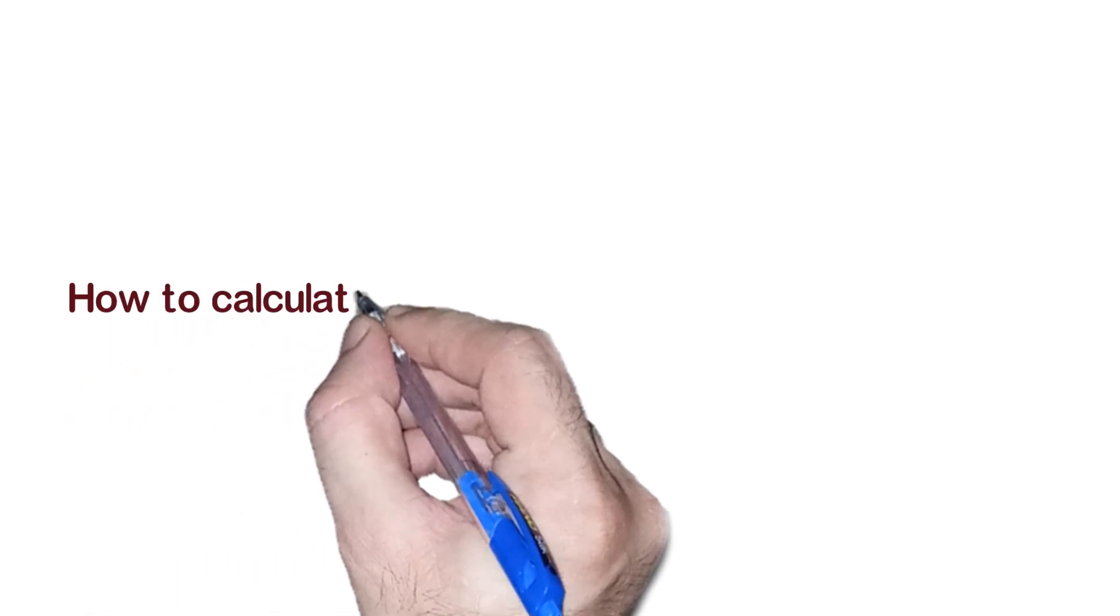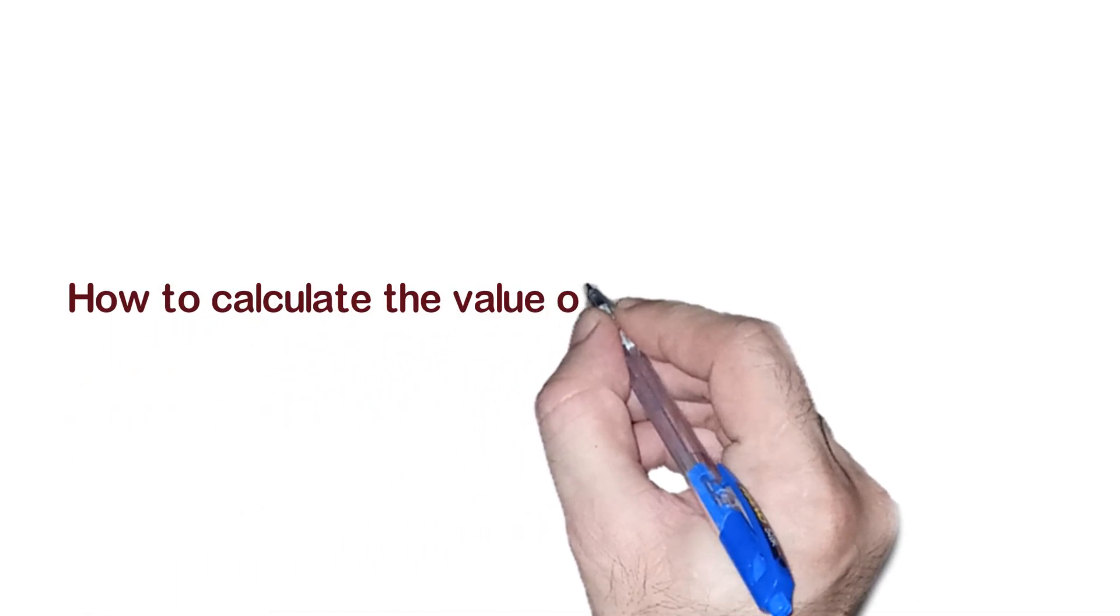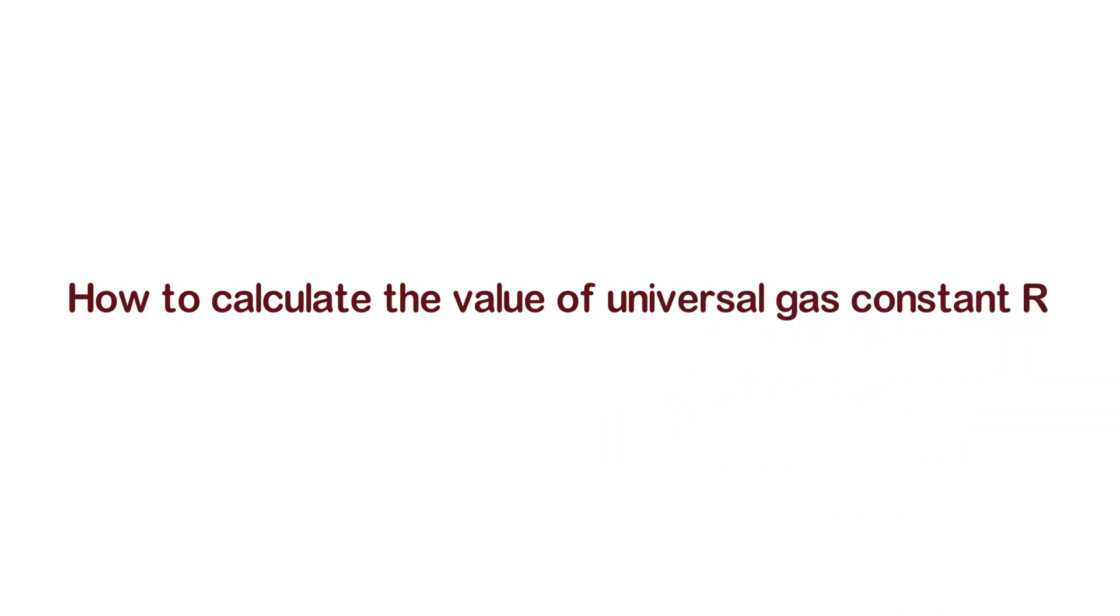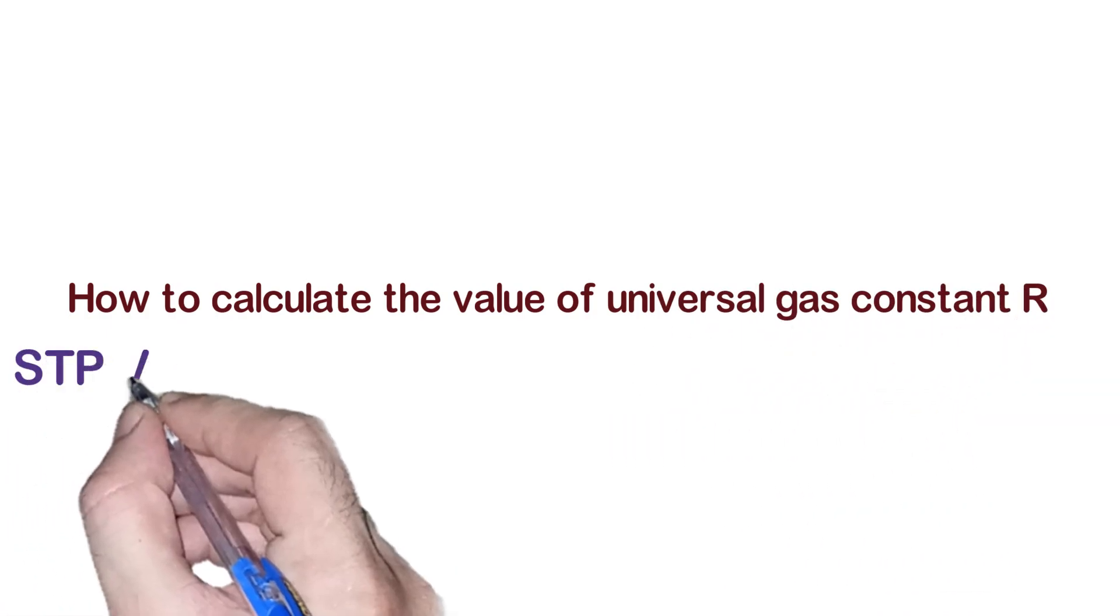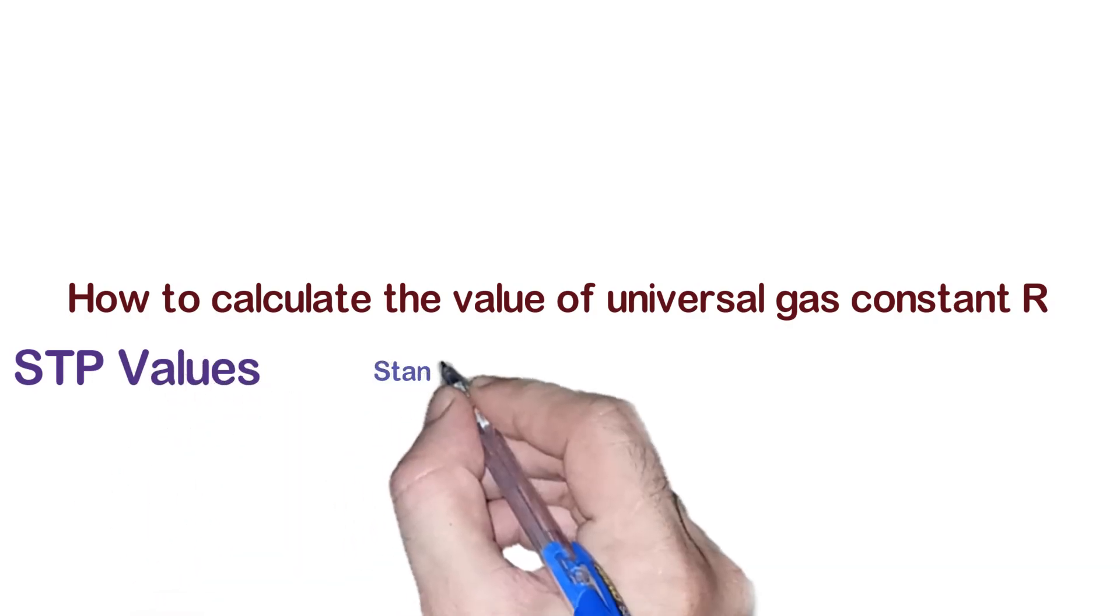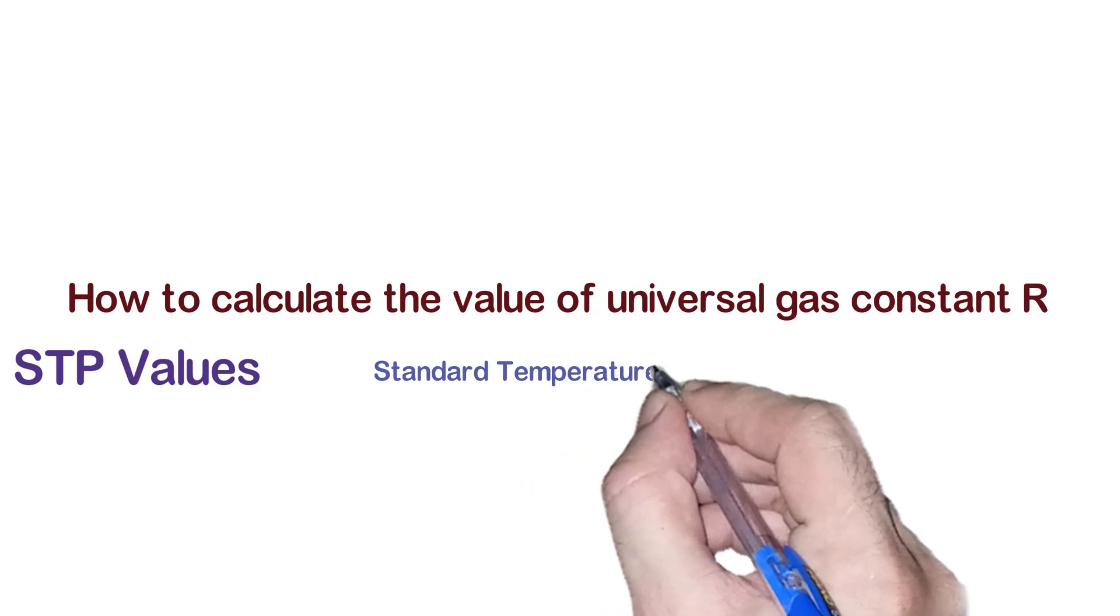Hello. Today's video is about how to calculate the value of universal gas constant. We can calculate the value of universal gas constant using STP values. So what are STP values? STP values are known as Standard Temperature and Pressure.